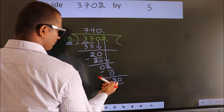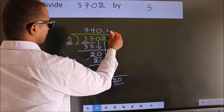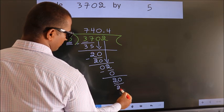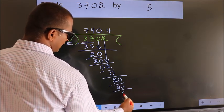So, 20. When do we get 20? In the 5 table. 5 times 4 equals 20. Now we subtract. We get 0.